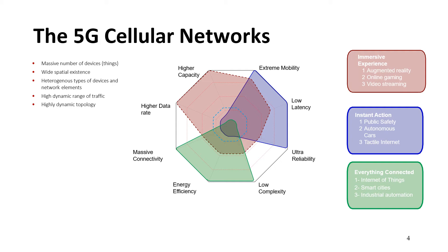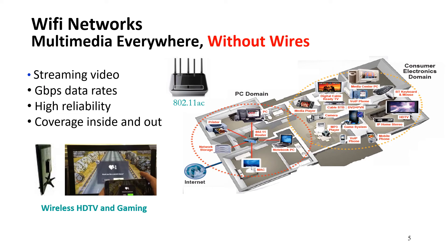In addition to cellular systems, we can look at Wi-Fi. For Wi-Fi networks, it's usually used to avoid wires with high data rates — like connecting to your router inside the home. There are different standards: 802.11 AC/X or NG. They're used for streaming video at gigabit-per-second data rates, with high reliability and coverage inside and outside. One application is also wireless high-definition TV and gaming.